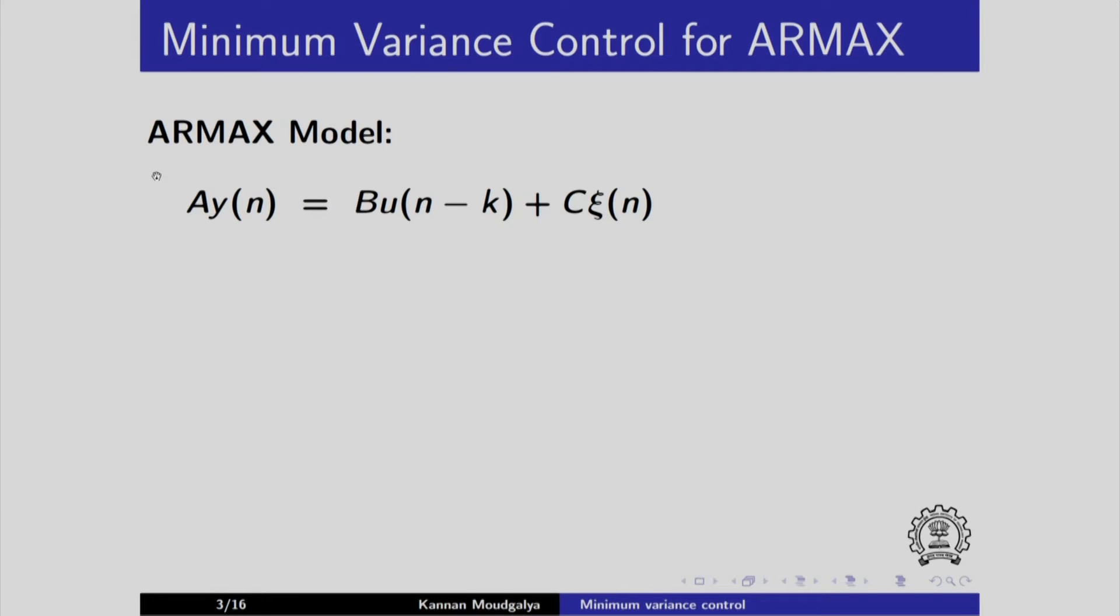Start with the ORMAX model we have seen before. Recall that we split this C by A into Ej and Fj. And on substitution, we got this. Of course, we made this 0 and got the best prediction error model. But for now, we will retain the noise here.